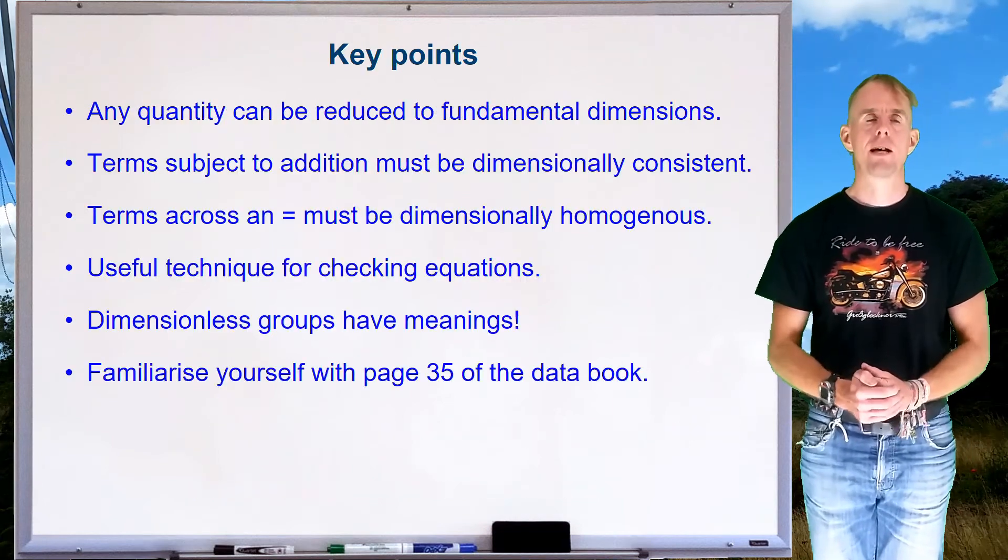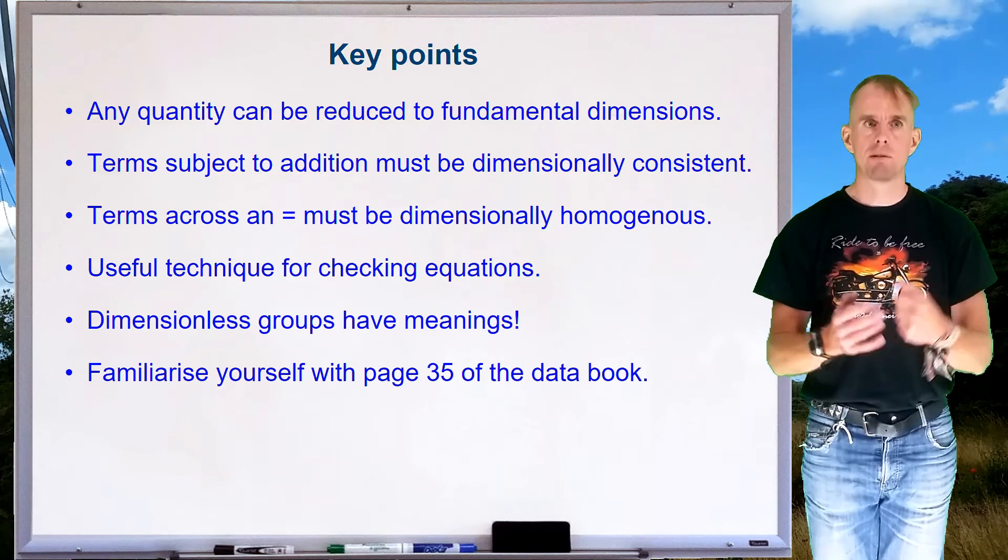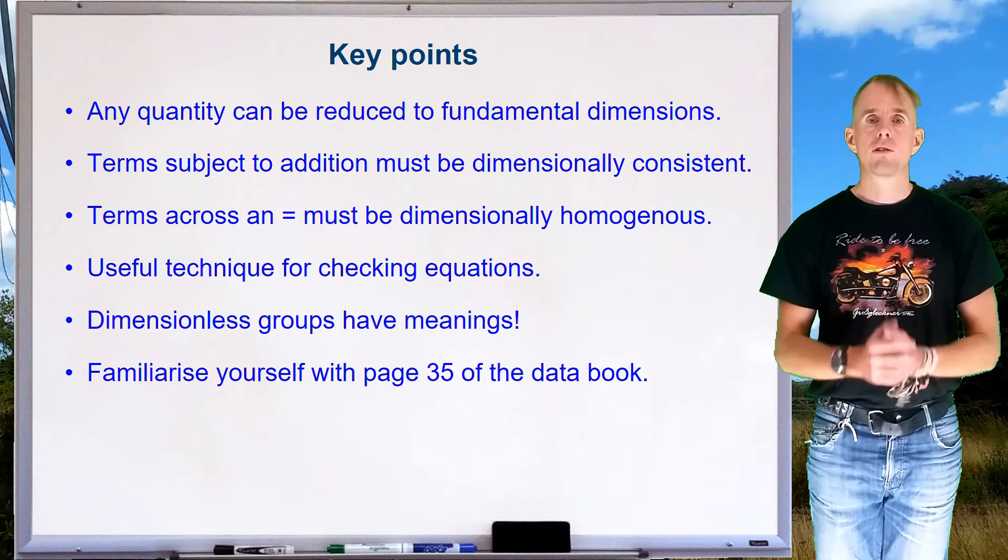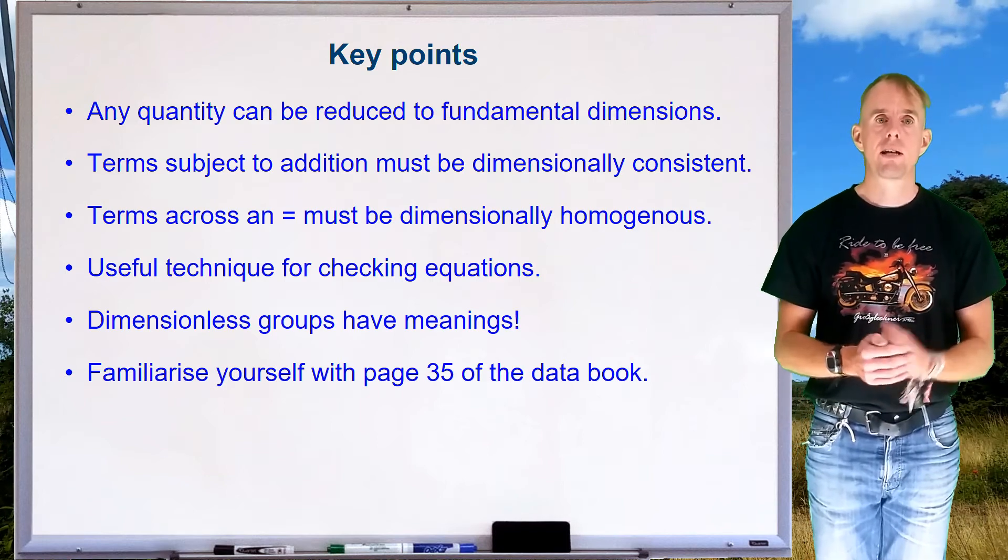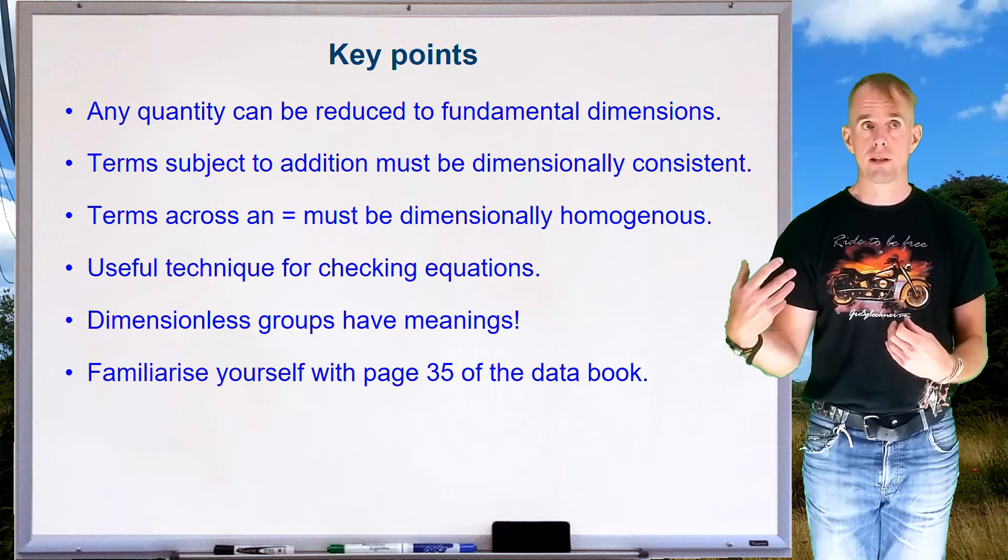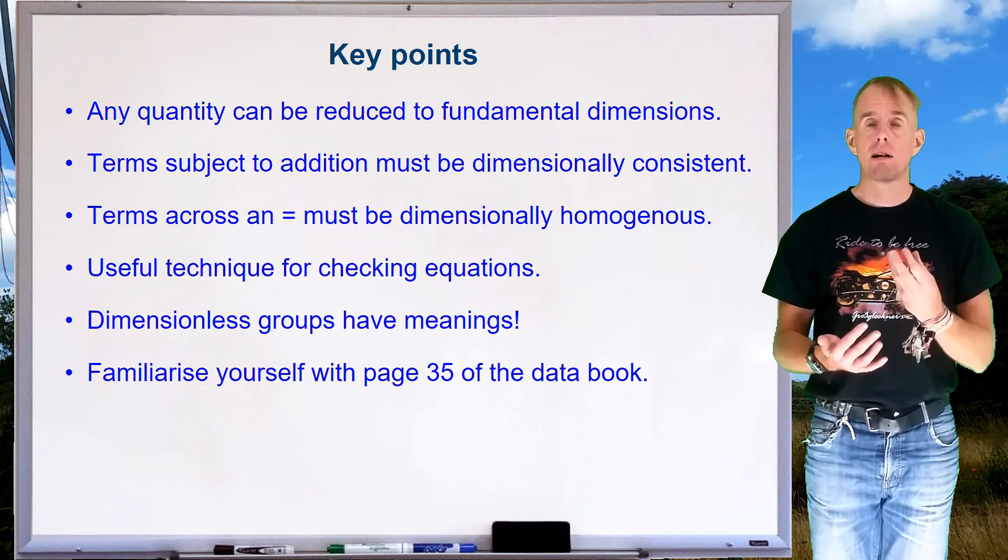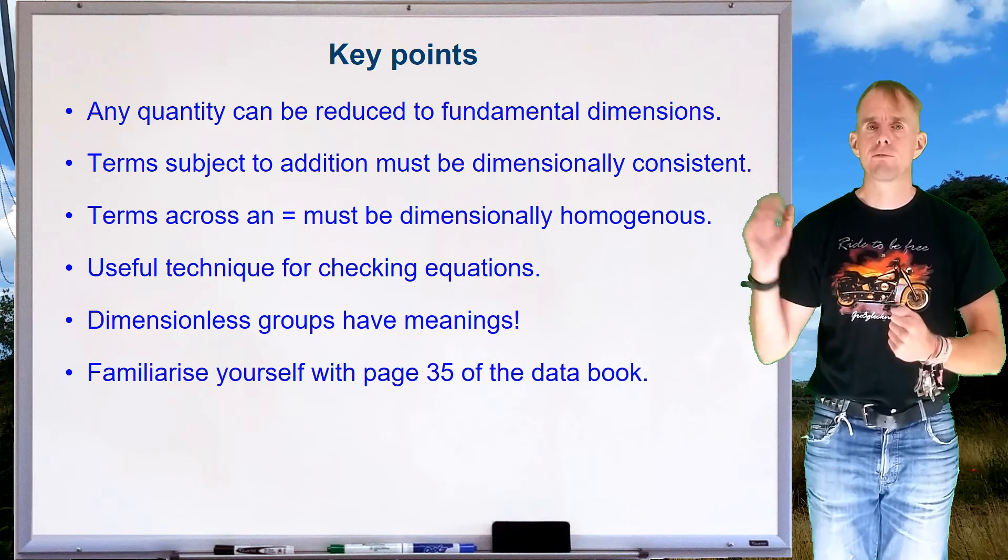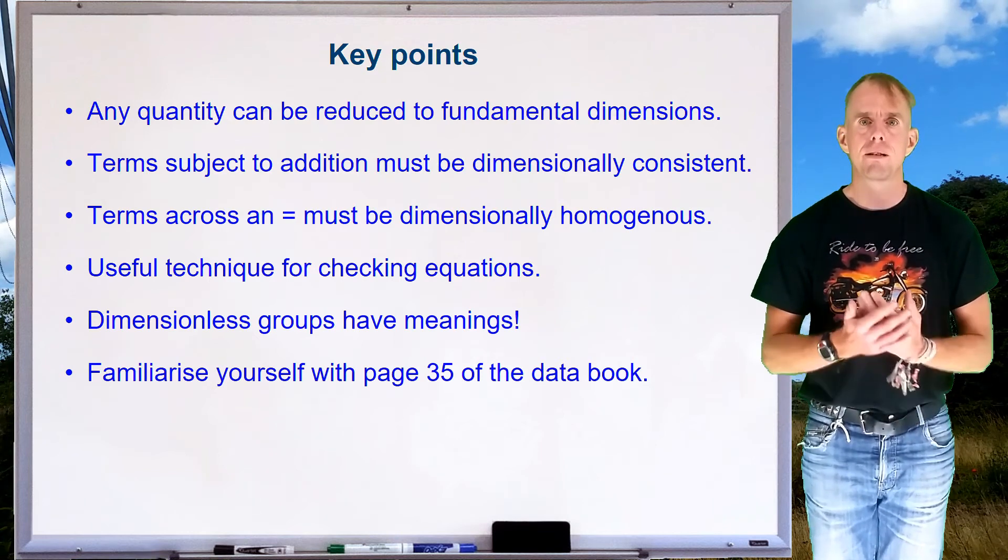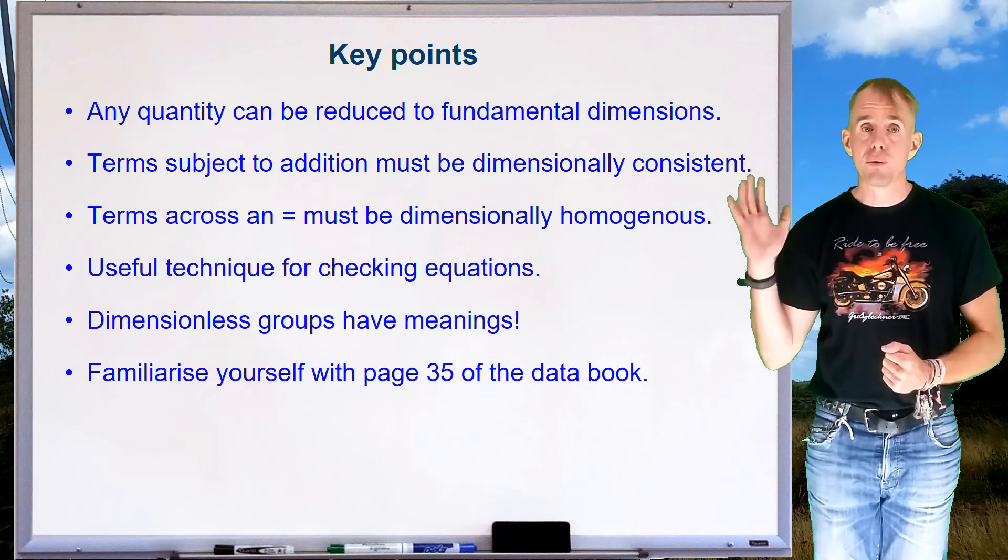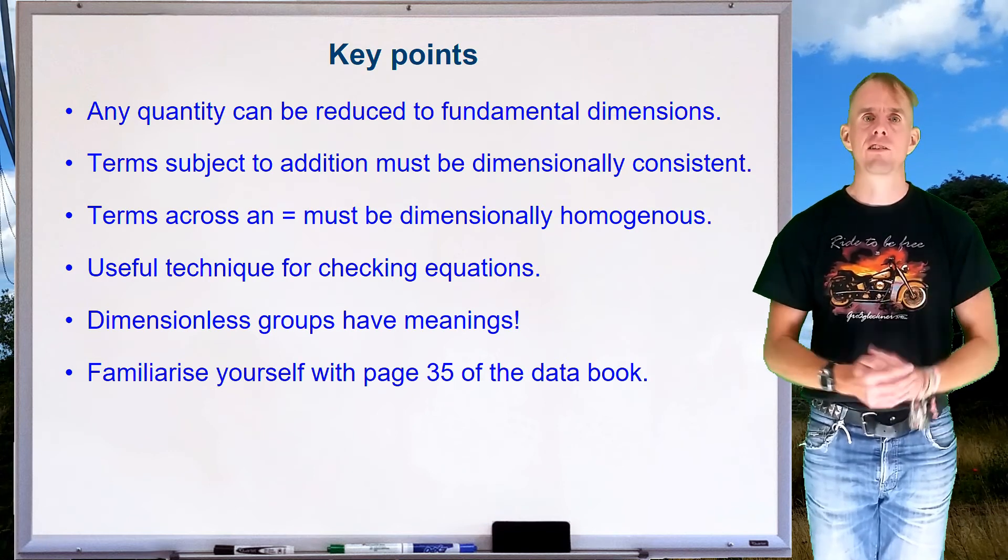Now, let's recap a few key points. Any parameter can be reduced to fundamental dimensions: mass, length, time, temperature, quantity of material. If we're adding terms together, all those terms must be dimensionally consistent. If you look at it in an equation, what appears on the left-hand side of an equal sign has to have the same dimensions as what's on the right-hand side of an equal sign. And we've seen an example of where we can use that concept to check whether an equation is correct or not, or whether we're using the right values of parameters in an equation. Please don't forget, in chemical engineering, dimensionless groups have meanings. They give us insight into a problem. Please become familiar with these meanings. In doing so, please become familiar with page 35 of your data book. It will help you massively when you come to put dimensional analysis into practice. Thank you so much.